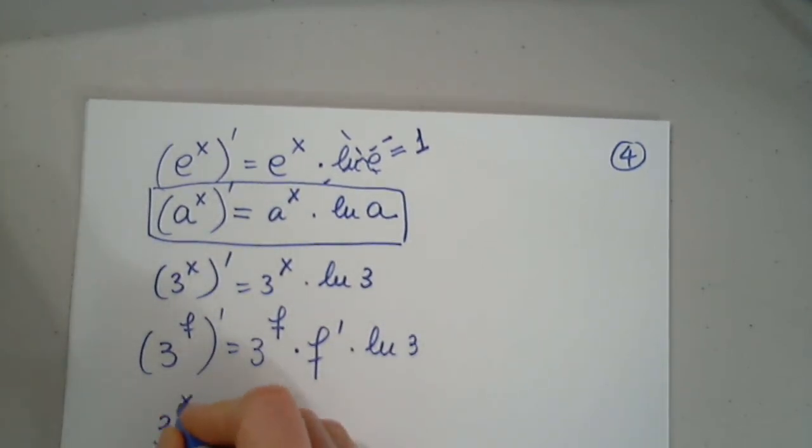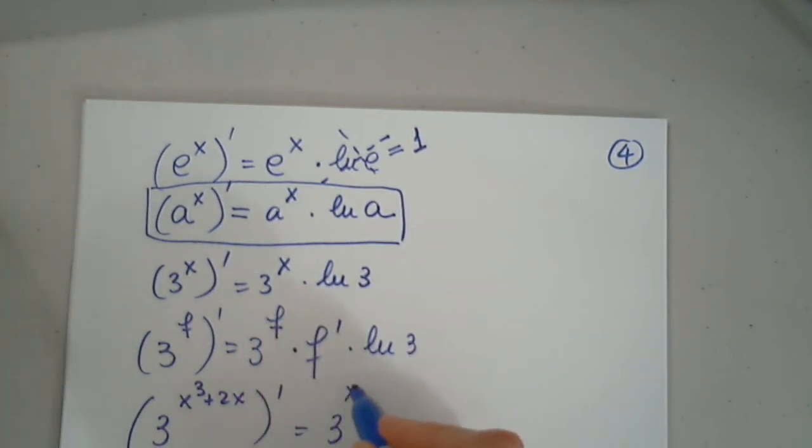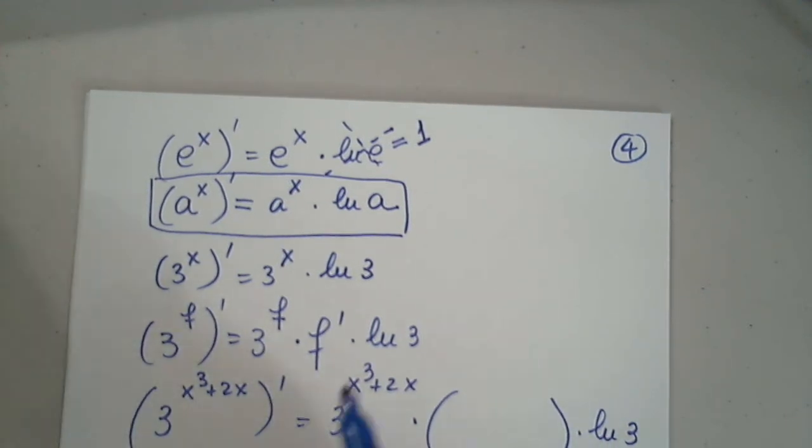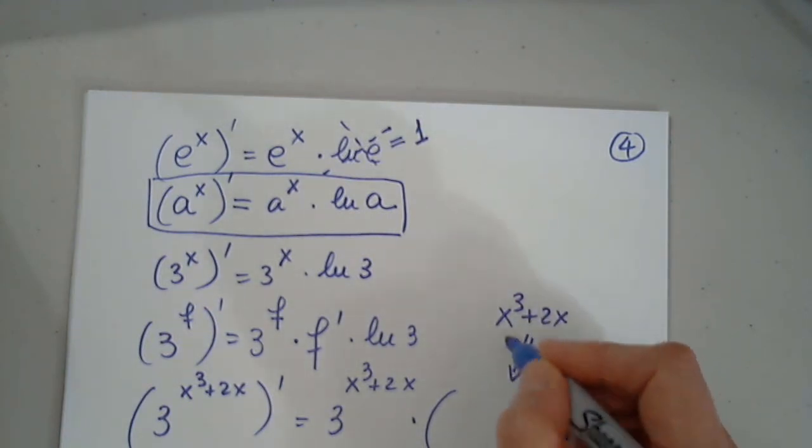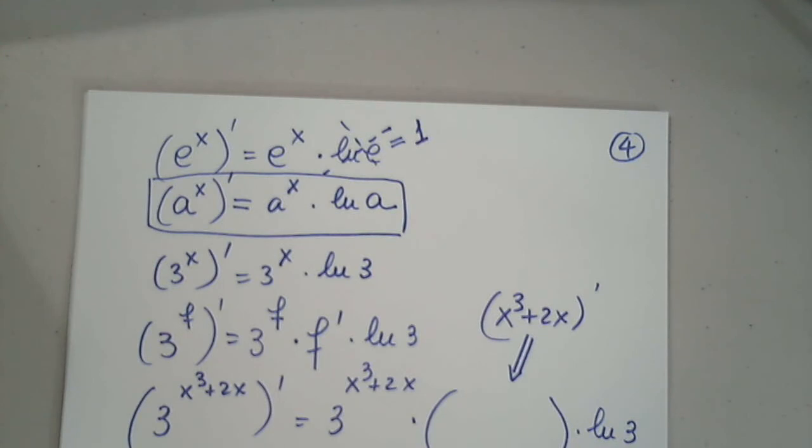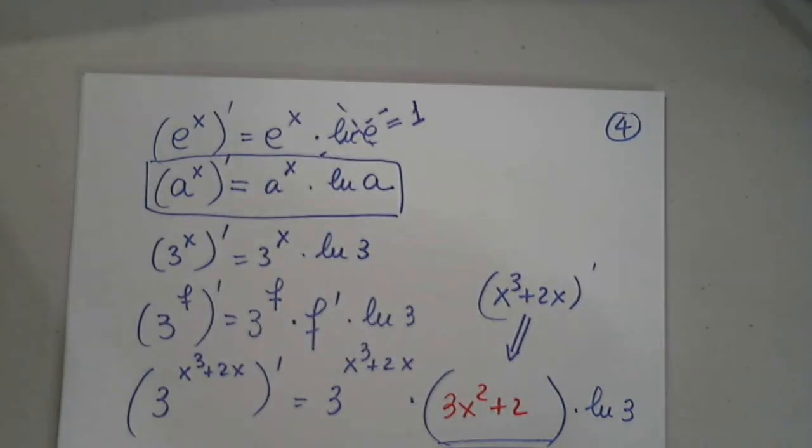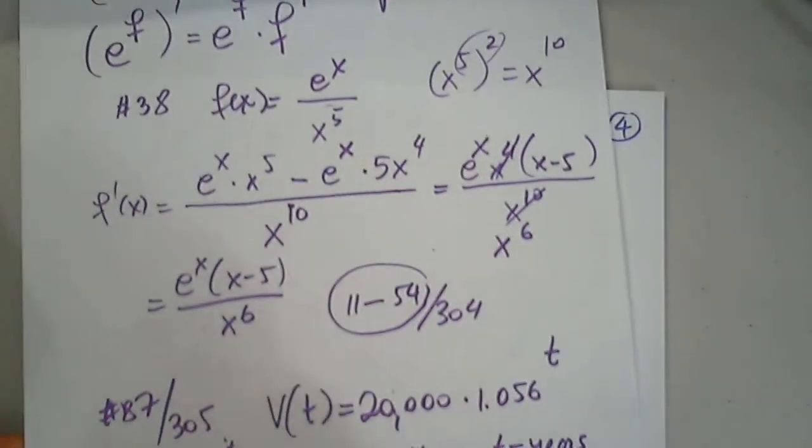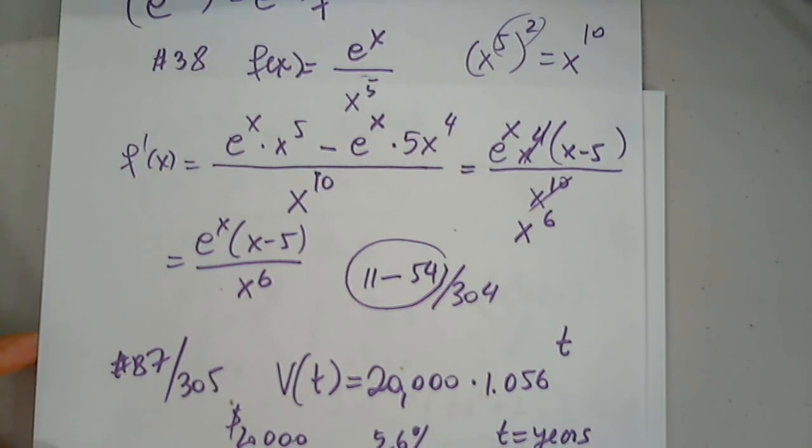For example, if I have 3 raised to (x³ + 2x) prime, I still have 3 to the function multiplied by the function prime, which we'll write in a minute, multiplied by natural log 3. I haven't heard Noor yet, so Noor, can you give us the derivative of x³ + 2x so we can write it in here? I'm not 100% sure. Is anyone 100% sure? It's just 3x² + 2. Very good.